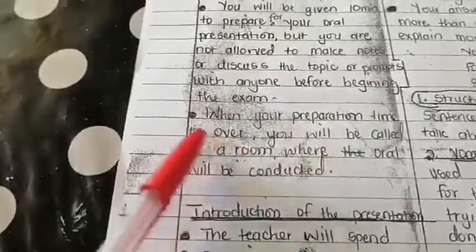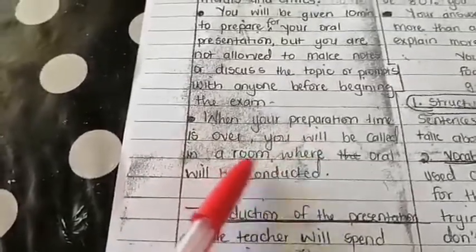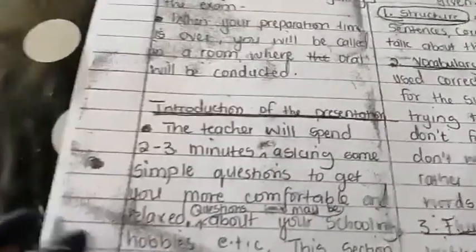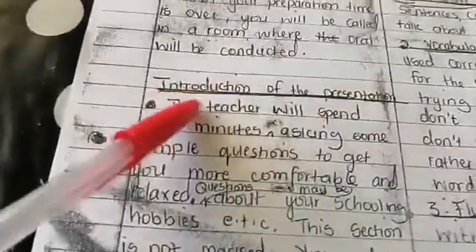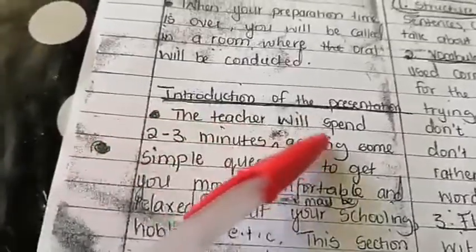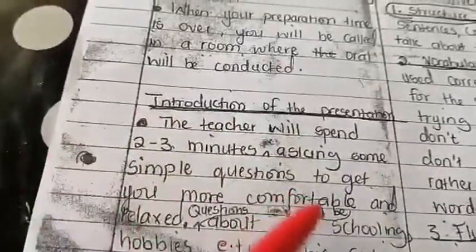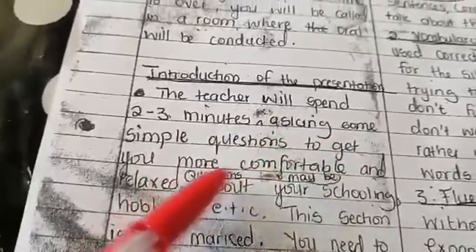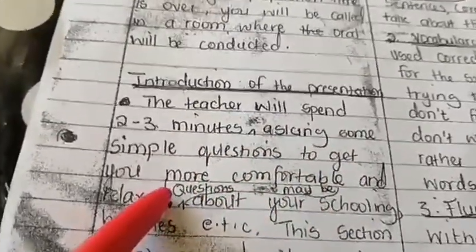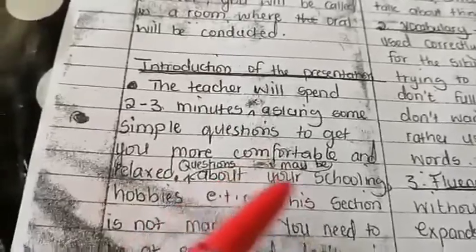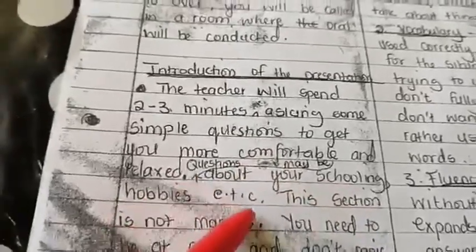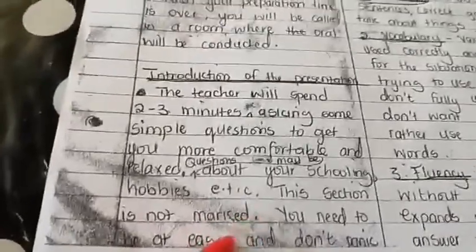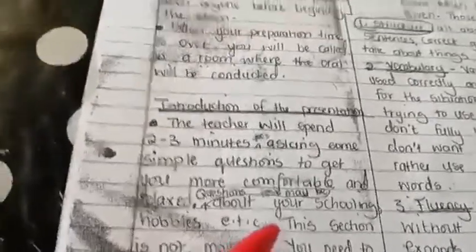When your preparation time is over, you will be called into a room where the oral will be conducted. Now let us talk about the introduction of the presentation. The teacher or examiner will spend two to three minutes asking some simple questions to get you more comfortable and relaxed. Questions may be about your schooling, hobbies, or anything else. This section is not marked — you just need to be at ease and please don't panic.